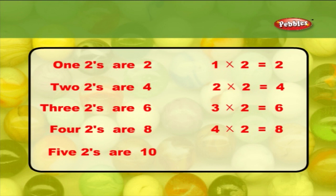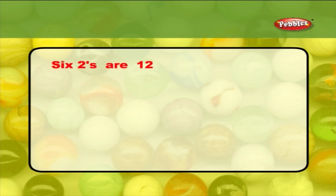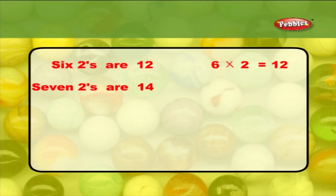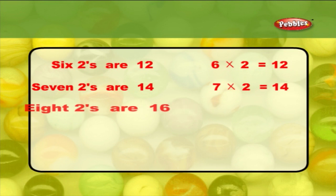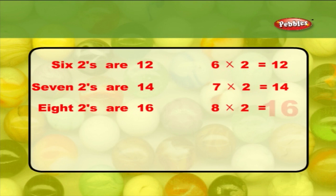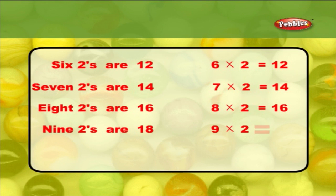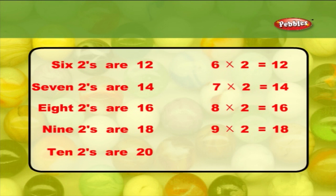Five twos are ten. Five into two is equal to ten. Six twos are twelve. Six into two is equal to twelve. Eight twos are sixteen. Eight into two is equal to sixteen. Nine twos are eighteen. Nine into two is equal to eighteen. Ten twos are twenty. Ten into two is equal to twenty.